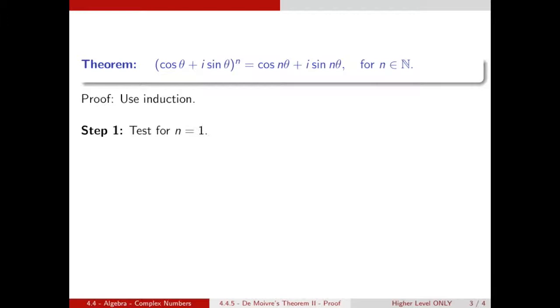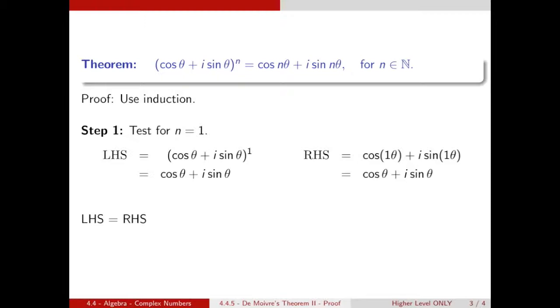So first let's substitute into both sides of the equation and see what happens. The left hand side, n is one, so we get cos theta plus i sine theta to the power of one, which becomes cos theta plus i sine theta. And the right hand side, again we substitute in n equals one, we get cos one theta plus i sine one theta, which is just equal to cos theta plus i sine theta. So we have the left hand side equals the right hand side, so we can say therefore our equation is true for n equals one.